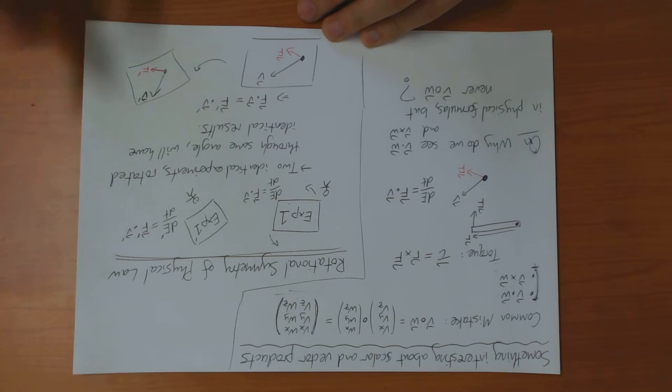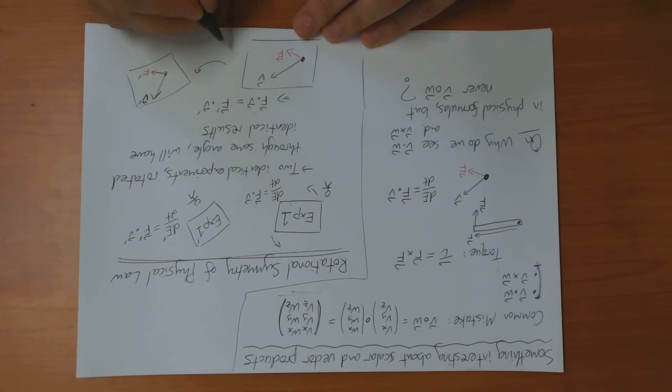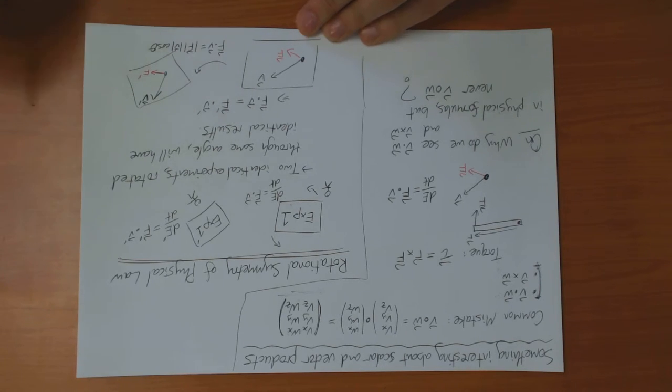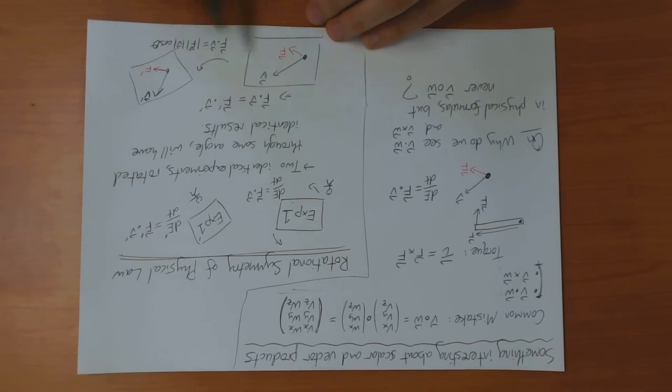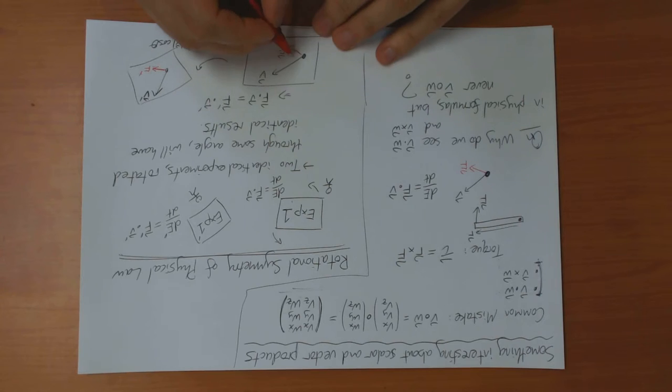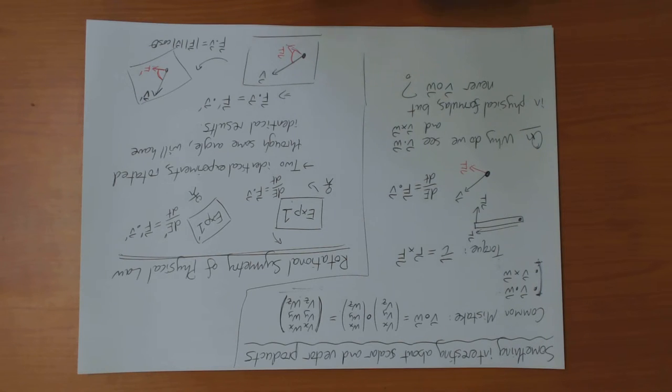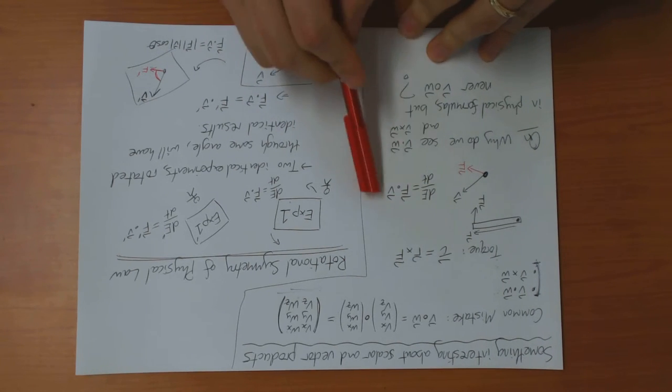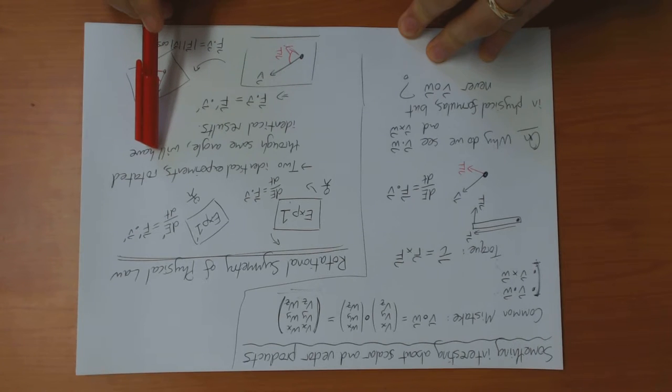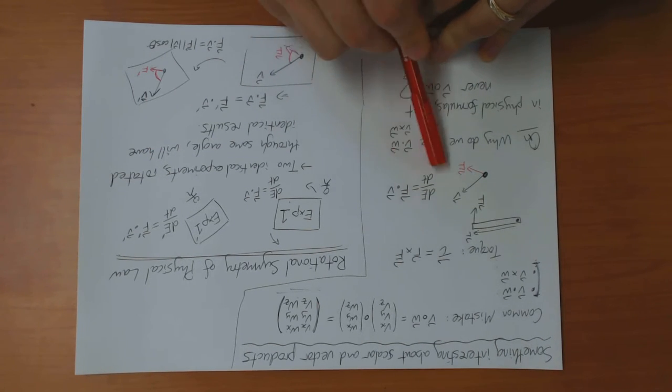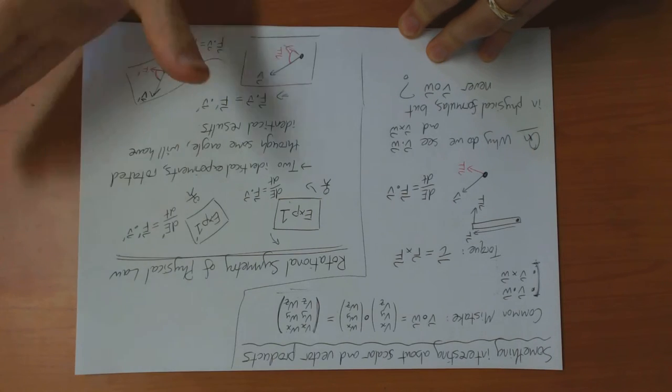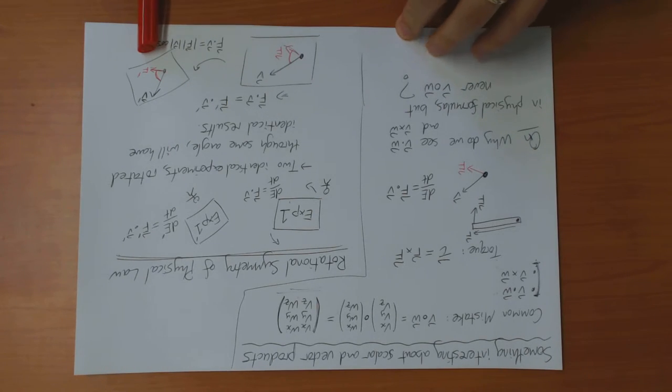And this is obviously true, because we know that the scalar product of F and V is that F dot V is length of F length of V times the angle between them. But if all we do is rotate the experiment, then we don't change the length of V, and we don't change the length of F, and we don't change the angle between them. This angle here is exactly the same as this angle there. So therefore, as long as your formula is using the scalar product, you can be sure that this symmetry is true. As long as your physical law is expressed in terms of the scalar product, you can be sure that rotating the experiment will not change the answer.